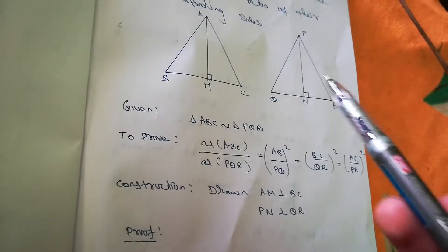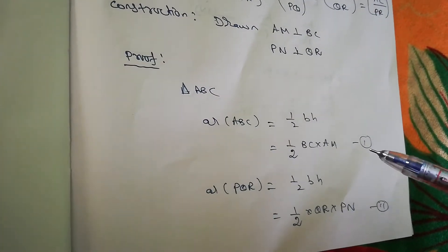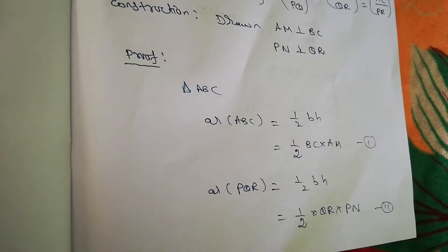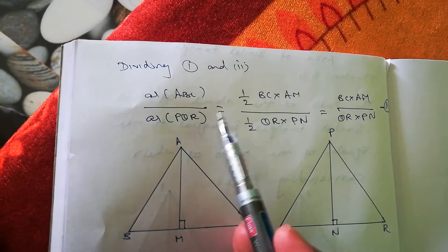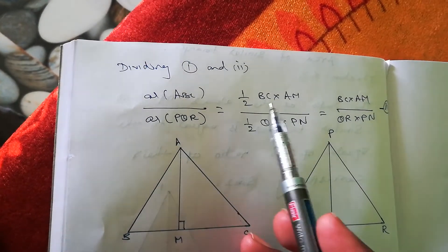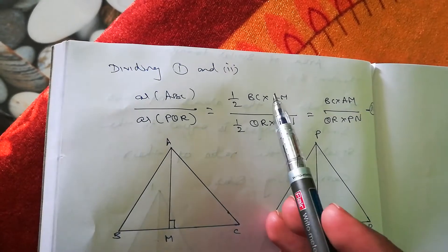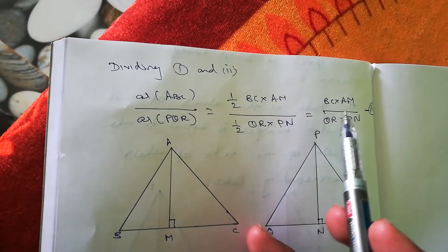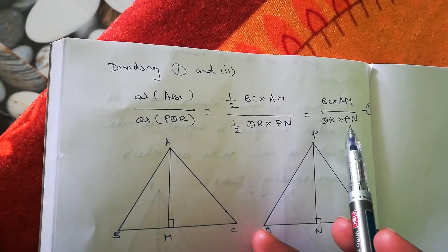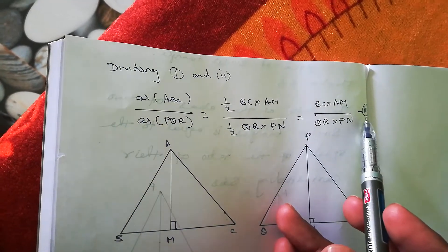Dividing equation one by equation two: area of ABC by area of PQR equals (half × BC × AM) by (half × QR × PN). Cancelling the halves, we get BC × AM by QR × PN. This is equation three.